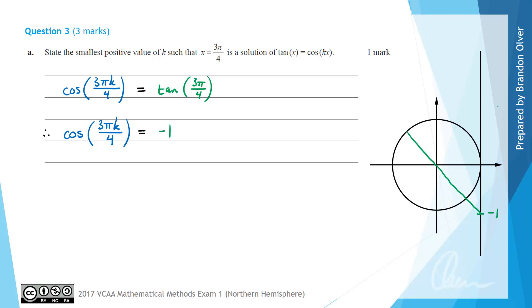However, to get cos to equal negative 1, we need to be in this position on the unit circle here, where there are coordinates (-1, 0), so the cos value is negative 1. And to get to there, we need an angle of π. So therefore, we need 3πk/4 to equal π.